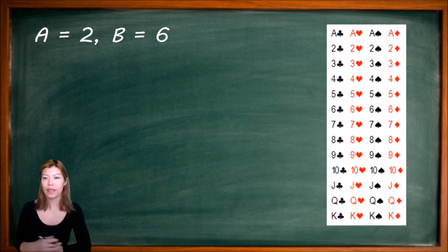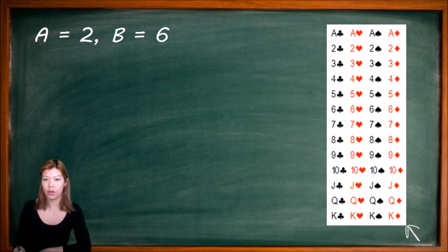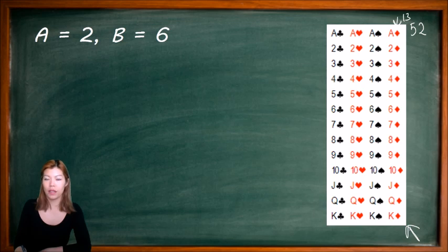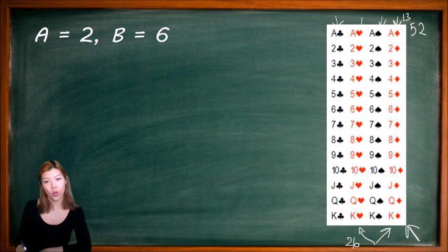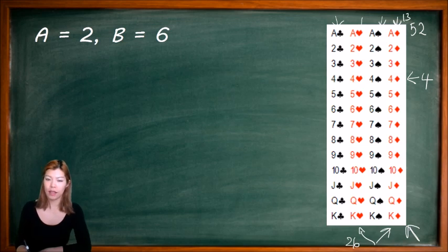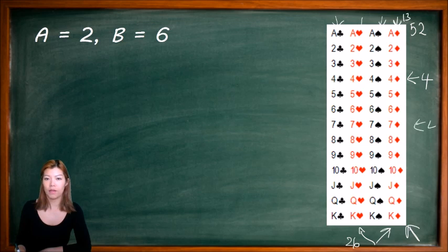Let's look at something else now. Say we have 52 cards — these are all the cards. There are 52 cards and there are 13 of each suit: clubs, hearts, spades, and diamonds. There are 26 of each color — 26 red, 26 black — and we have 4 of each card value in the different suits. So there are 4 sevens, 4 eights, 4 of each.